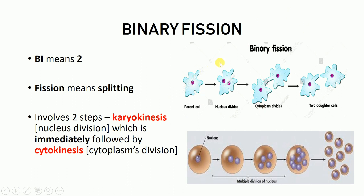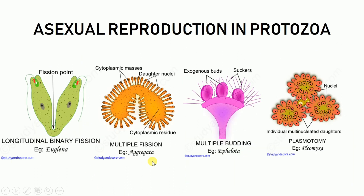Here we can see the example of amoeba. In an amoeba we have a parent cell with a nucleus. This nucleus is going to undergo karyokinesis — it's going to divide into two nuclei — and this is immediately followed by the division of cytoplasm, giving us two daughter cells. The word 'immediately' is very important here, because if cytokinesis doesn't follow karyokinesis immediately, we result in a situation known as multiple fission.